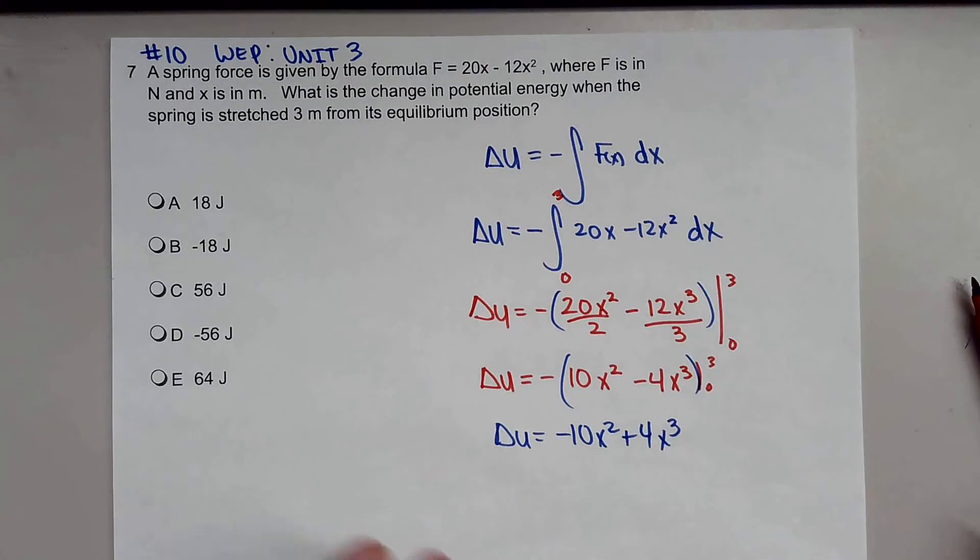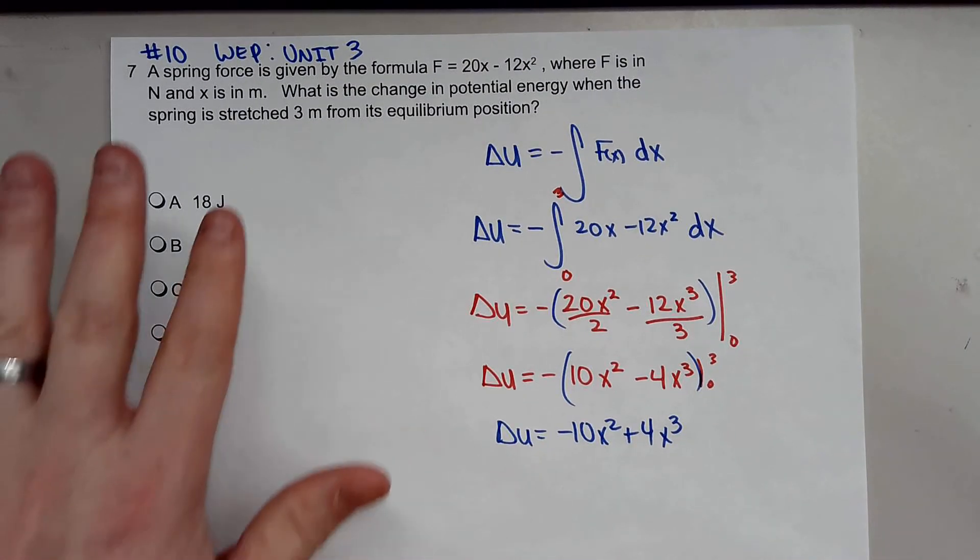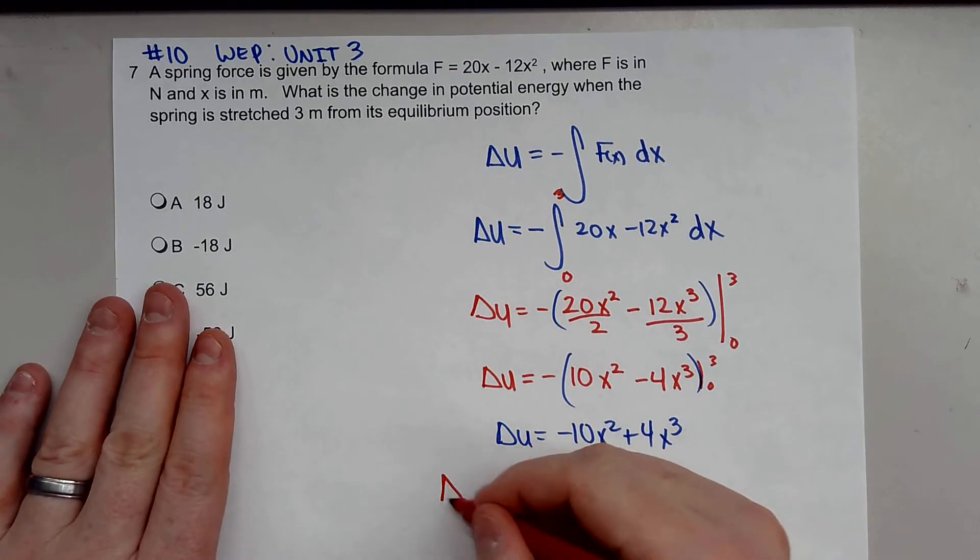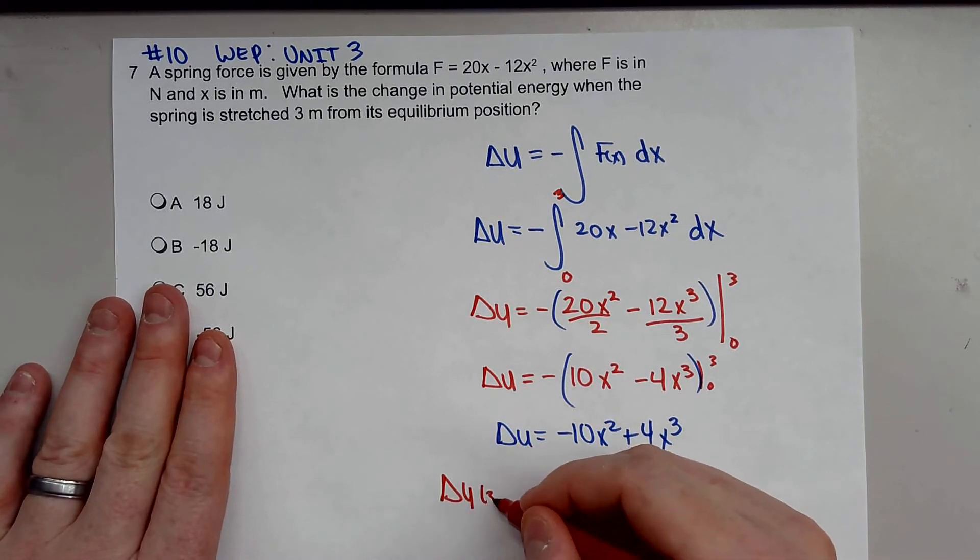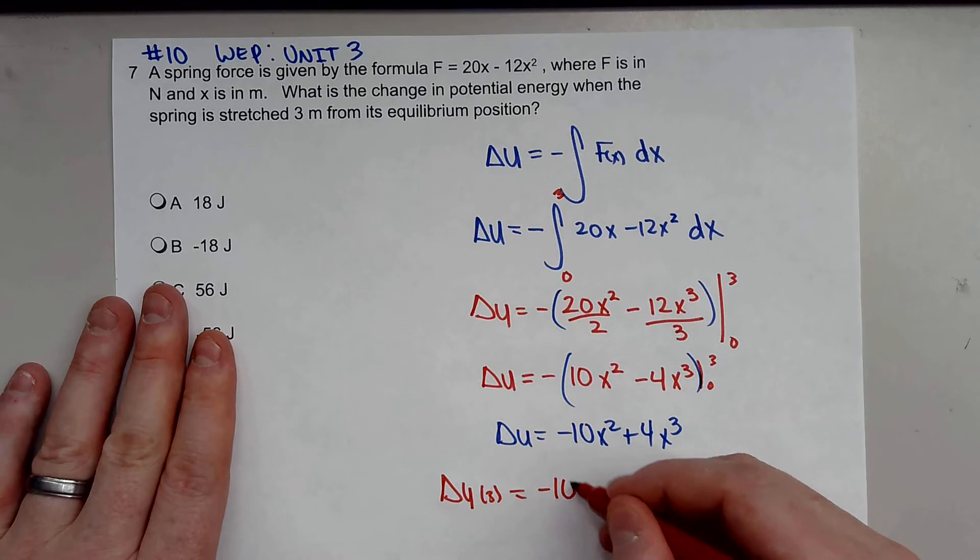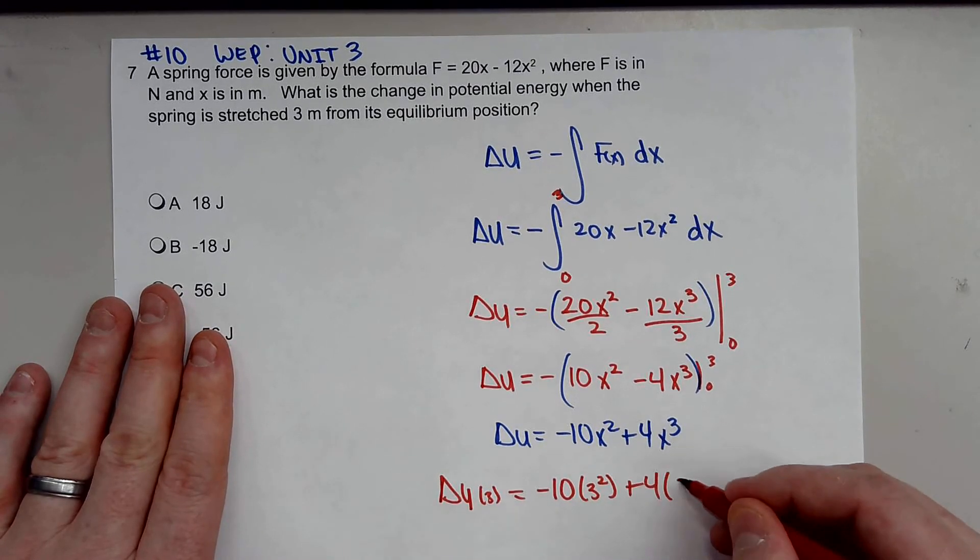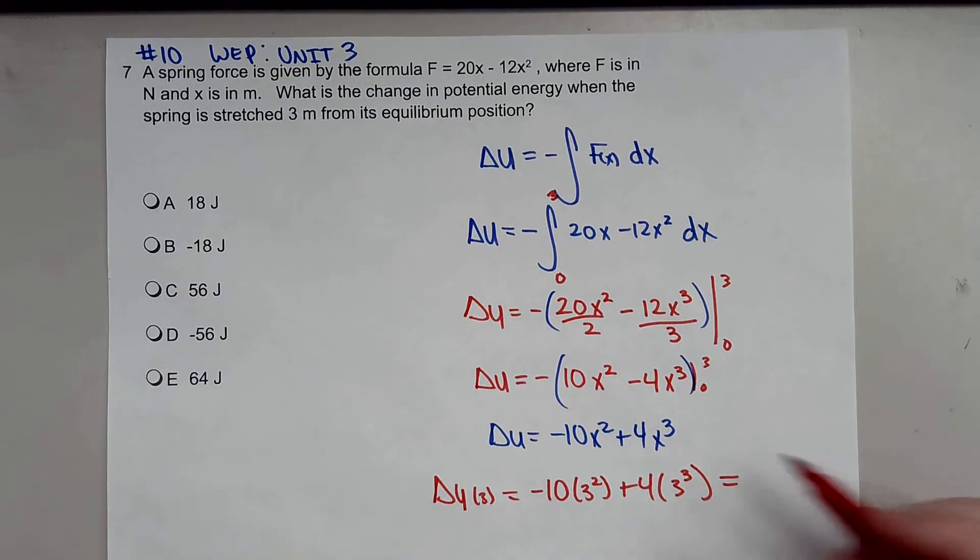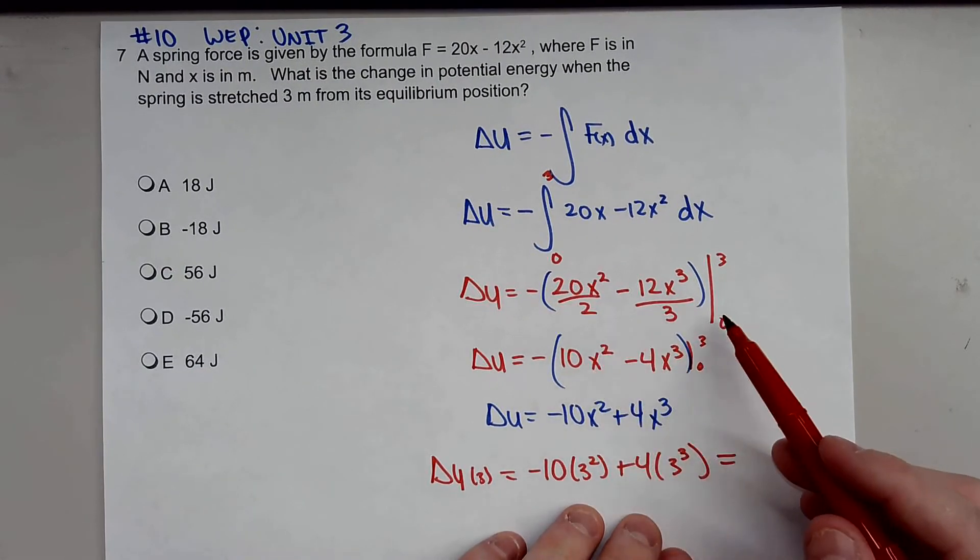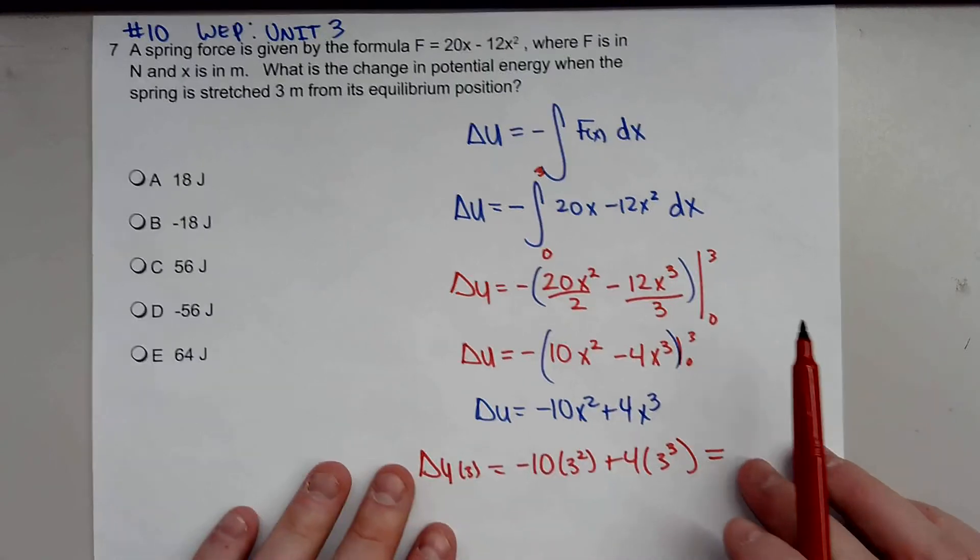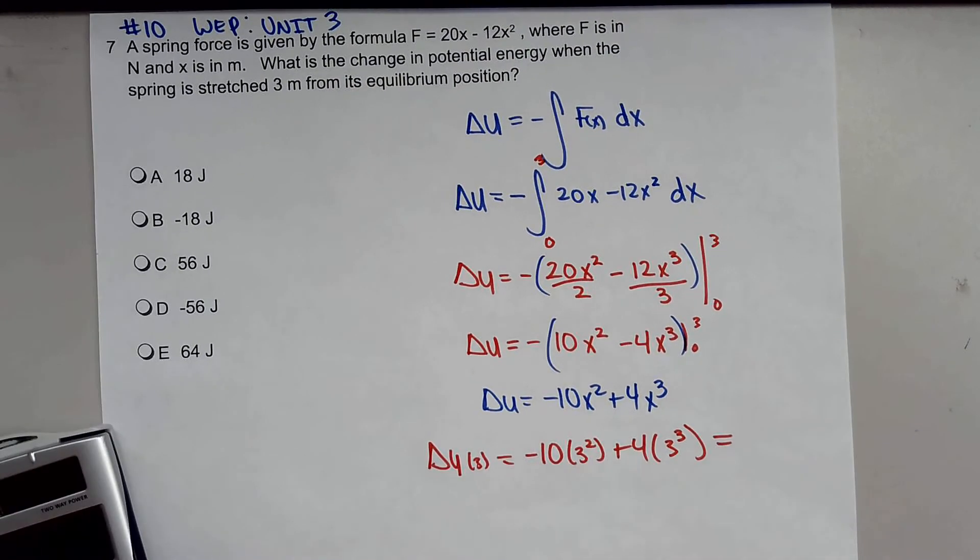Now that we have that, we can just plug in 3 here. The change in potential energy with 3 will be negative 10 times 3 squared plus 4 times 3 cubed. Obviously you'd have to do this again, but since this function is going to be 0, we don't have to do it again.